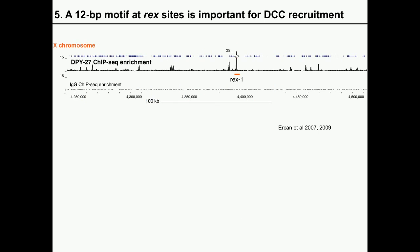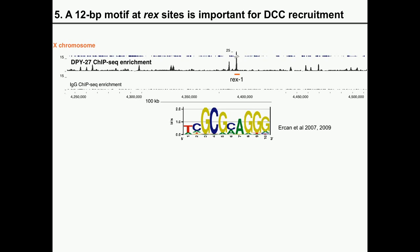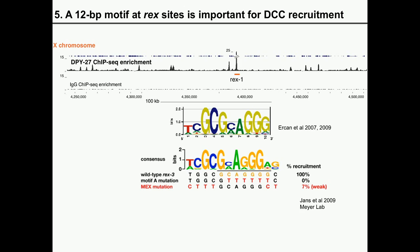Here is a high-resolution view of the dosage compensation complex binding. This ChIP-seq binding profile of one of the DCC members shows the recruitment and spreading targeting. You see very sharp, high binding peaks corresponding to recruitment elements on the X, and smaller peaks from spreading at gene promoters and enhancers. The complex is specific to the X-chromosome. Under these recruitment sites you see the motif, and the Meyer lab showed that mutating the motif abolishes recruitment. However, the motif is only threefold enriched on the X-chromosome.